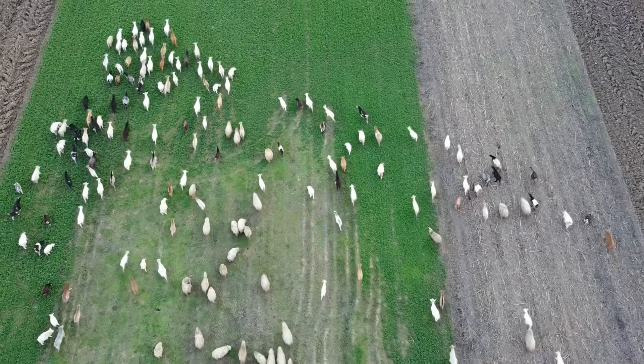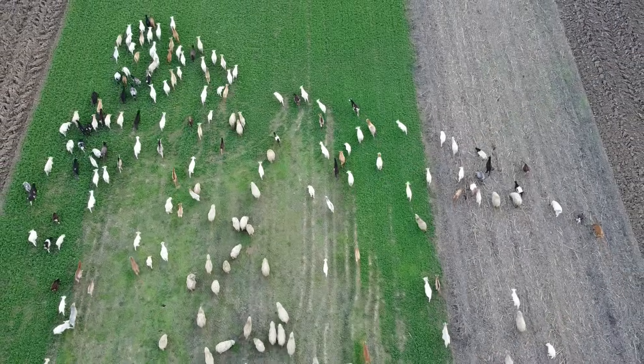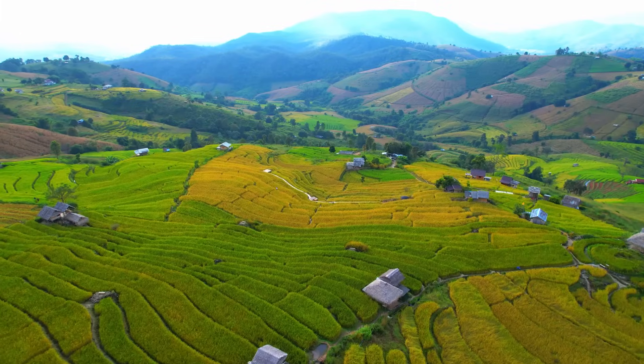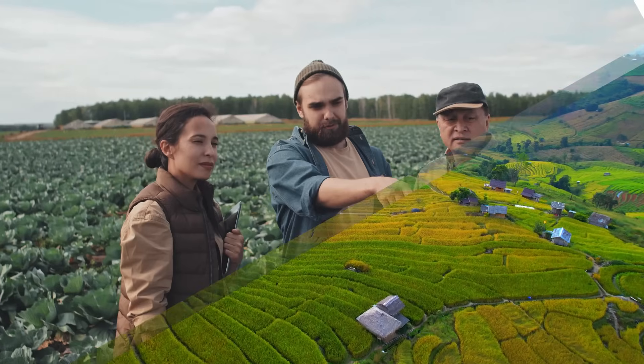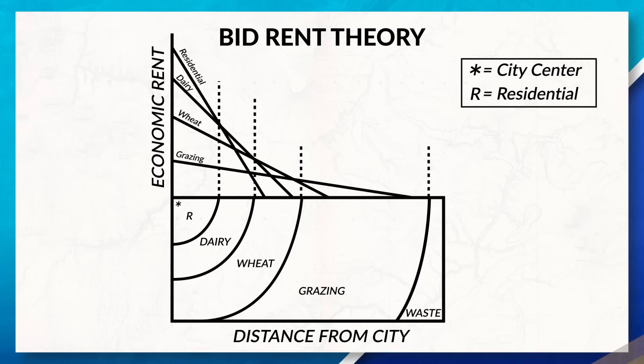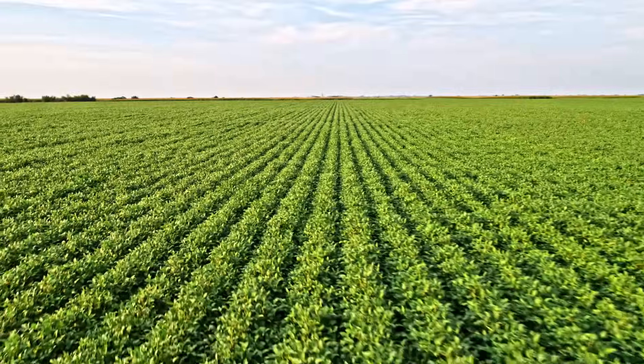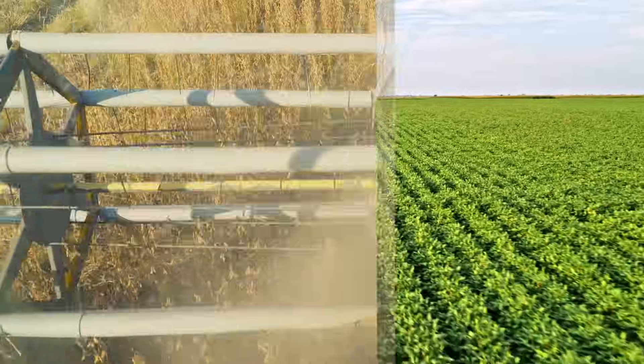Hello there geographers and welcome back to the Mr. Stinn channel. Today we're going to talk about different types of extensive and intensive subsistence and commercial agricultural practices. We're also going to review the bid-rent theory, monocropping, and monoculture. As always, if you find value in these videos, consider subscribing.